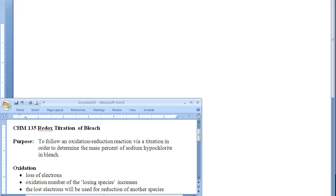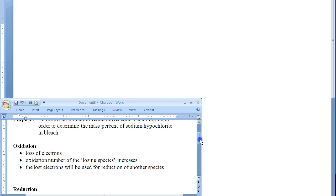The goal of the exercise today is to use oxidation-reduction, a category of reaction we're learning about in Chapter 4, to determine the mass percent of sodium hypochlorite, the active ingredient in household bleach. To do this, we need to understand the two processes occurring: oxidation and reduction.